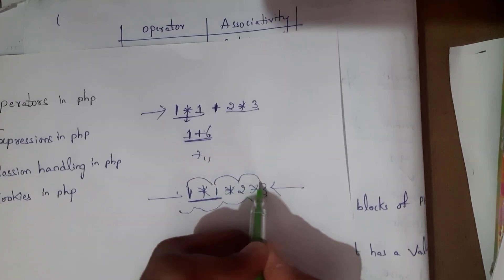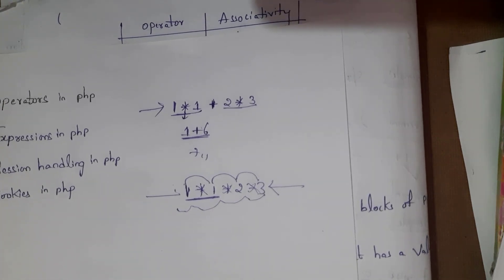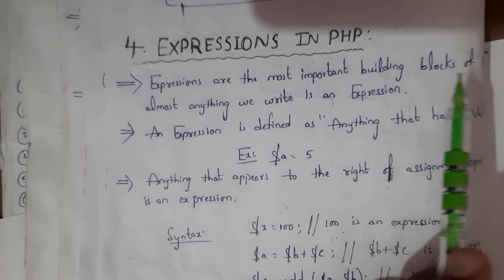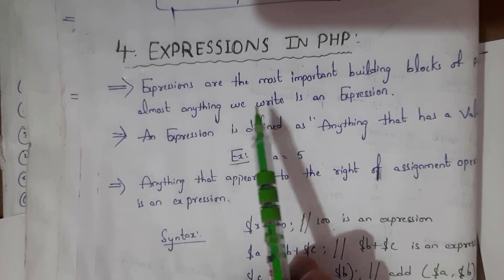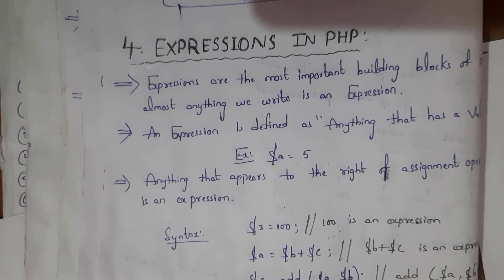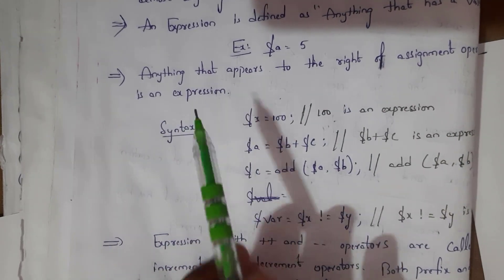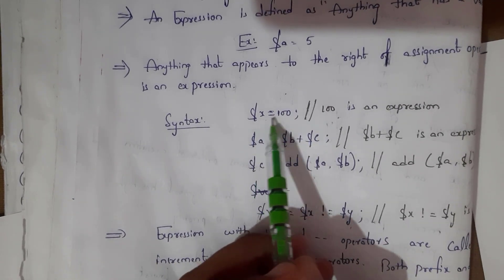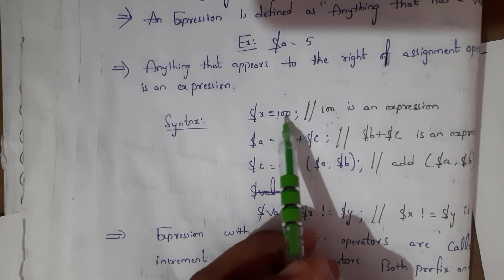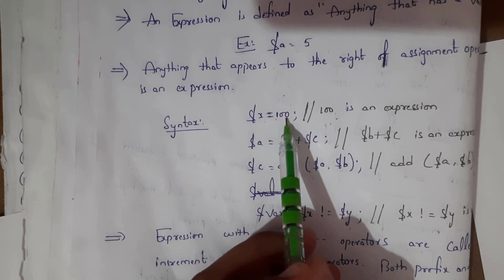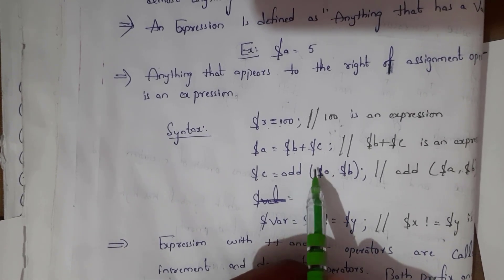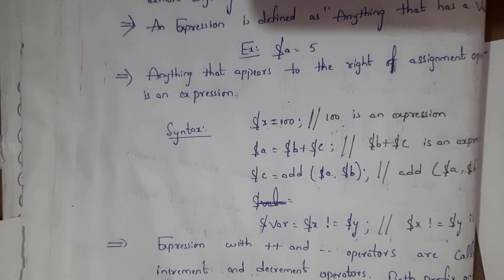The next topic is expressions in PHP. Expressions are the most important building blocks of PHP — almost everything we write is an expression. Anything that appears to the right of the assignment operator is an expression. For example, in '$x = 100', the value 100 is the expression. In '$b + $c' or 'add($a, $b)', those are also expressions.